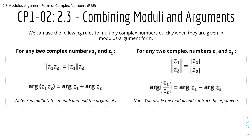Now we have combining moduli and arguments. We can use the following rules to multiply complex numbers quickly when they are in modulus argument form. For any two complex numbers z₁ and z₂: |z₁z₂| = |z₁| × |z₂|, and arg(z₁z₂) = arg(z₁) + arg(z₂) — so you multiply the moduli and add the arguments. For division: |z₁/z₂| = |z₁| / |z₂|, and arg(z₁/z₂) = arg(z₁) − arg(z₂) — these argument rules are similar to logarithm rules. You divide the moduli and subtract the arguments.